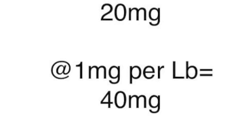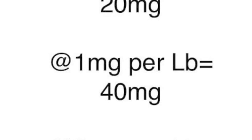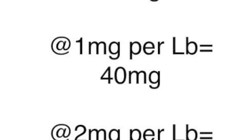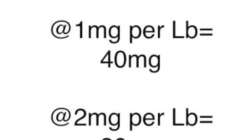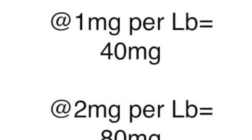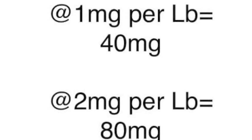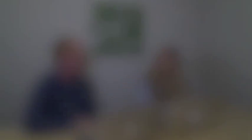If you then go to 2 milligrams per pound, again it's the number of milligrams per pound times the number of pounds, so 2 times 40 is an 80 milligram dose. It's a very simple algorithm once you understand the concept: you're simply taking the body weight of the child and multiplying it by the number of desired milligrams per pound. That gives you the total milligram dose by body weight.